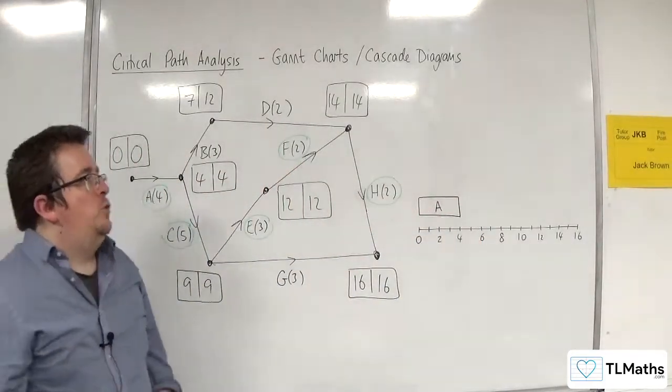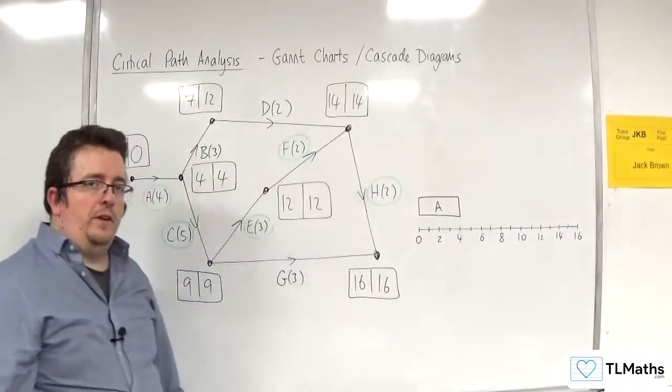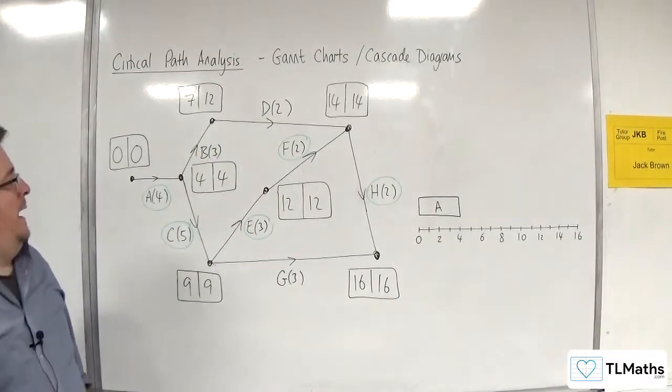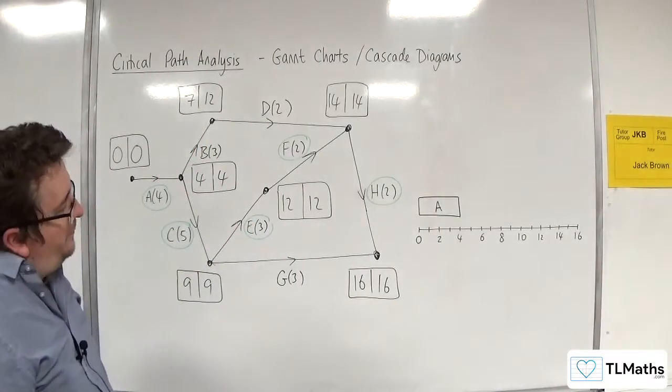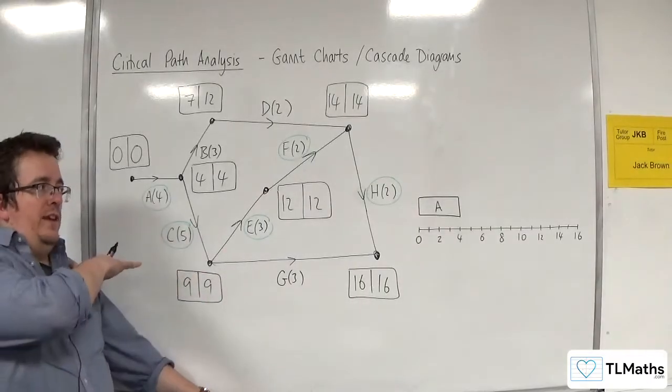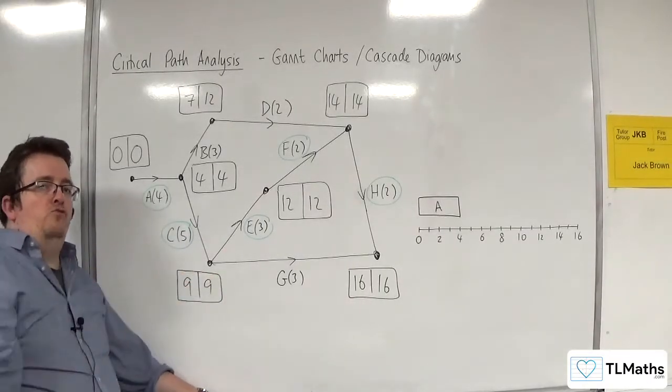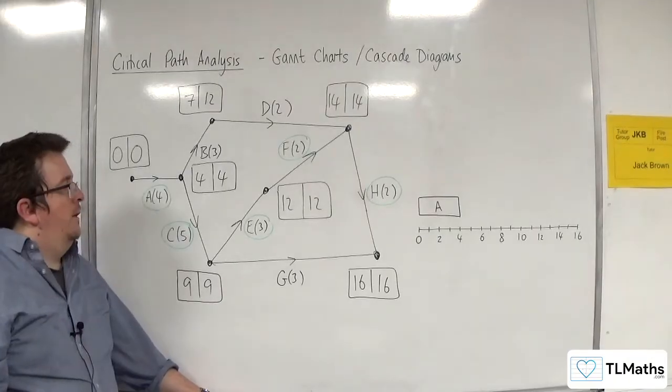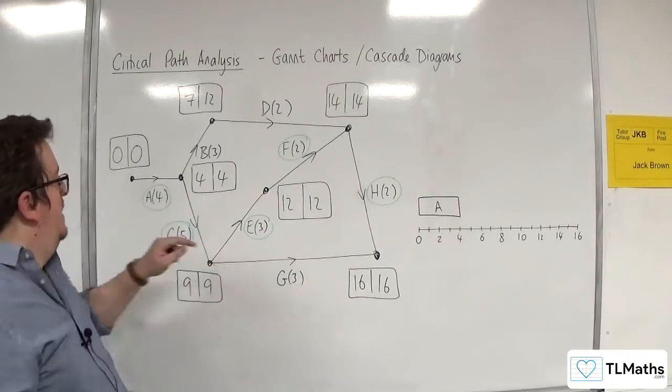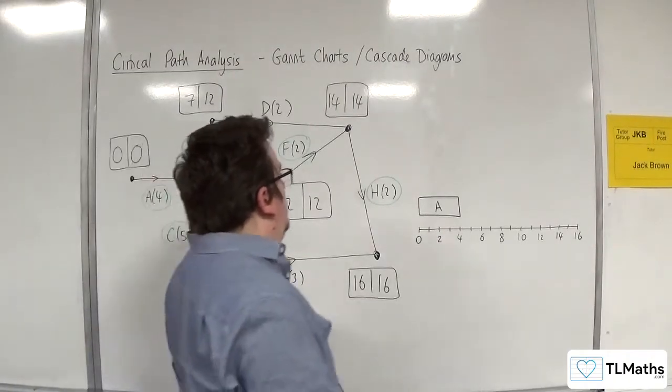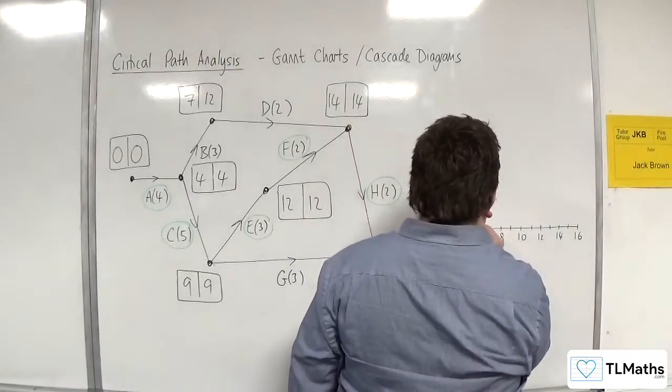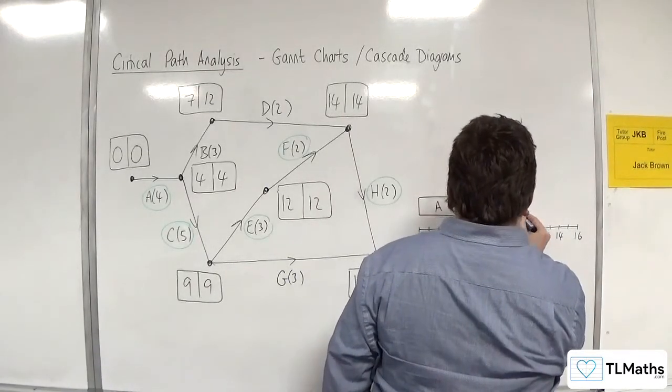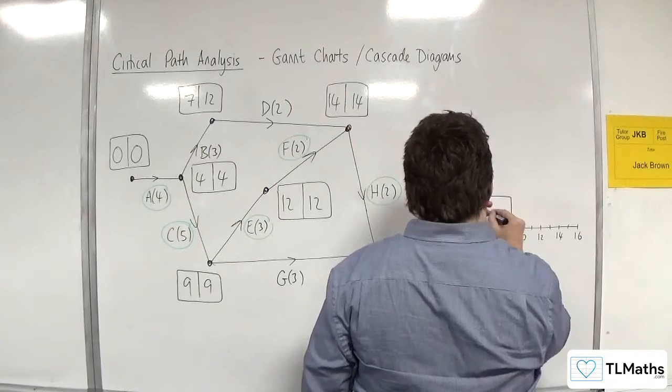So you want it above your time axis with a gap. That's where activity A goes. Now, all of the critical activities go in one single row at the bottom, like I've got here. So I've got A starting, then I've got C which goes between 4 and 9. There's C.